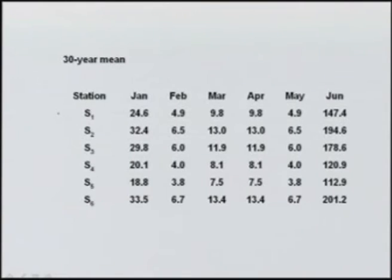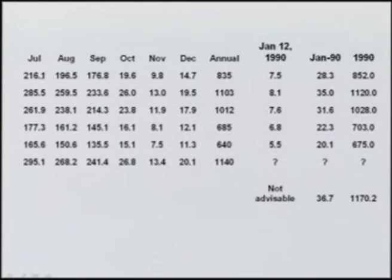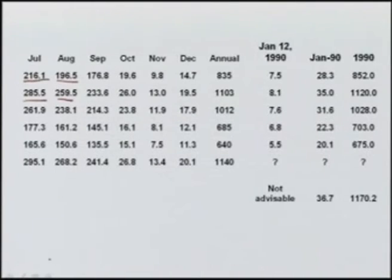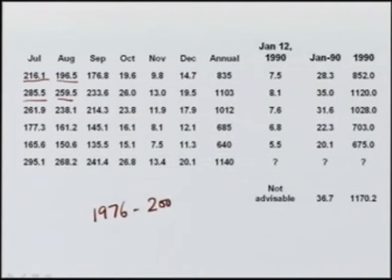Daily precipitation data is available to us, and we can analyze that daily data to find out the mean precipitation at each of these stations for different years. This table shows that at station S1, the 30-year mean value of precipitation in January is 24.6 millimeters. Similarly for February, March, April, May, June, and July as expected — the monsoon months of July, August, and September have higher precipitation compared to the months of March, April, and May. All 6 stations S1 through S6 have 30-year average data, say from the period 1976 to 2005.